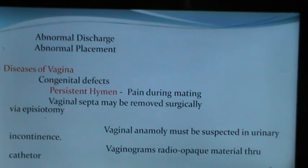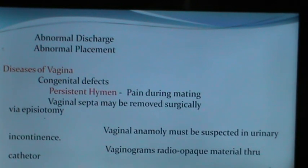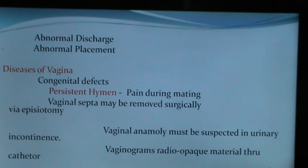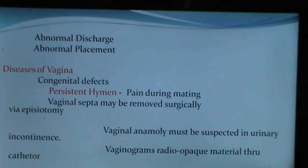Abnormal discharge or abnormal placement of the vulva can be treated with ease. Diseases of the vagina include congenital defects — the persistent hymen is most common, evident by pain during mating. Vaginal septa may also cause pain during mating and may be removed surgically via episiotomy. Vaginal anomaly must be suspected if there is urinary incontinence, and vaginograms using radiopaque material infused through a catheter can confirm the problem.